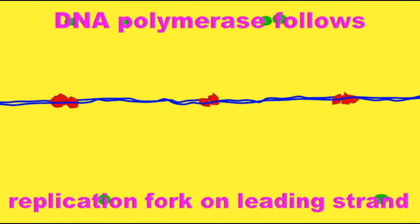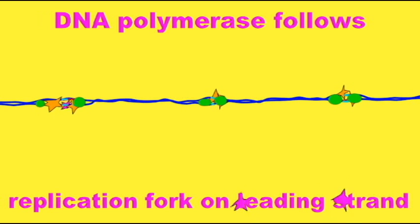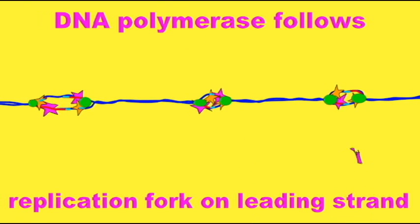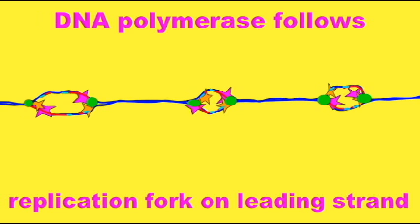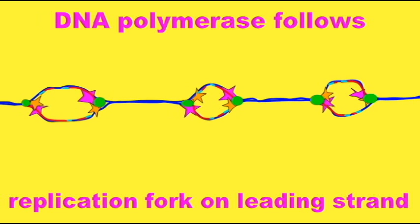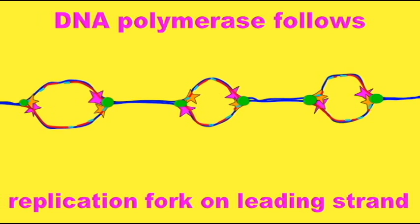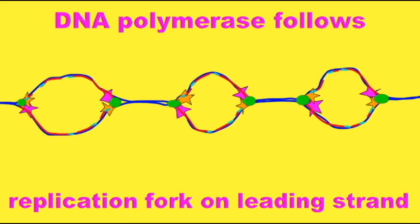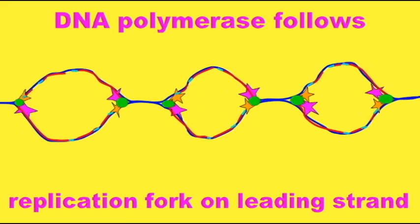So DNA polymerase will only add new nucleotides in the 5' to 3' direction. This is easy enough for the leading strand. For the leading strand, once the primer is made, DNA polymerase can simply follow helicase along the replication fork.